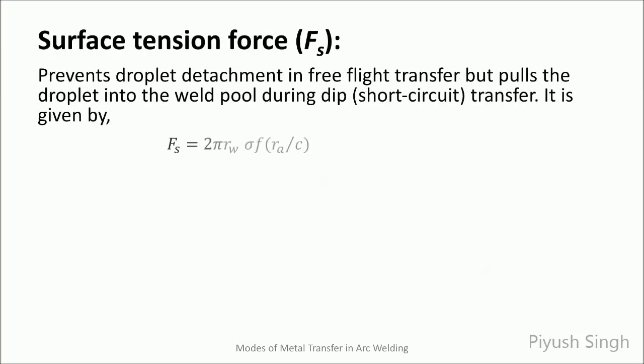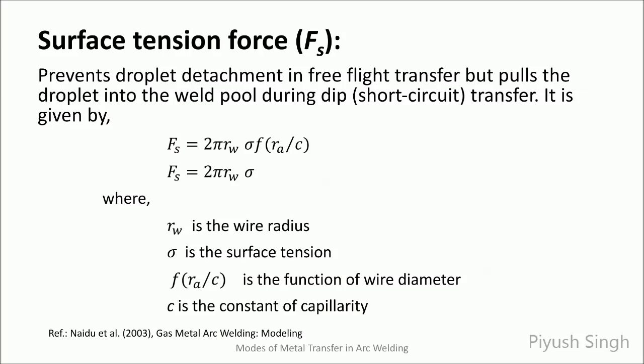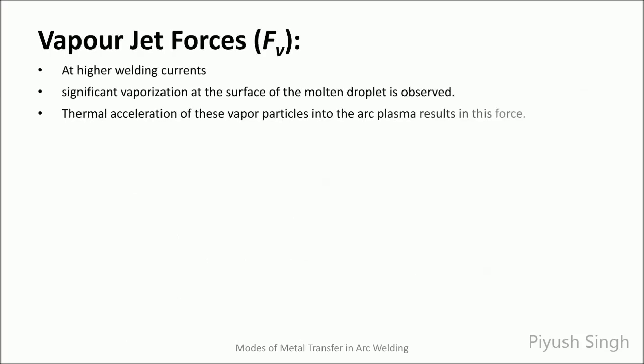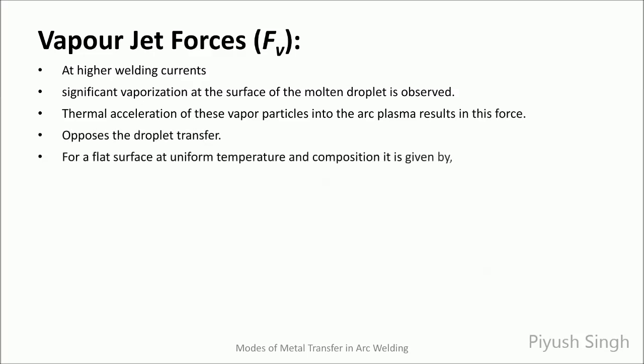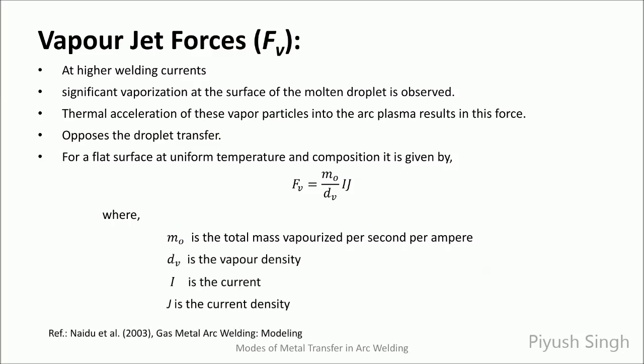In free flight transfer, surface tension is the principal force that prevents droplet detachment, and in dip or short circuit transfer, it is the force that pulls the droplet into the weld pool. At high welding currents, significant vaporization at the surface of the molten droplet can occur in the arc root area. Thermal acceleration of the vapor particles into the arc plasma results in a force called vapor jet force. This force opposes the droplet transfer.